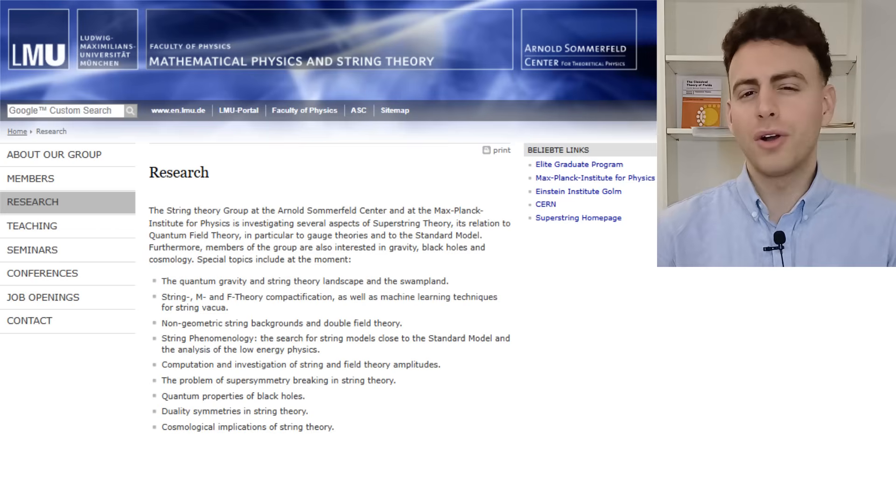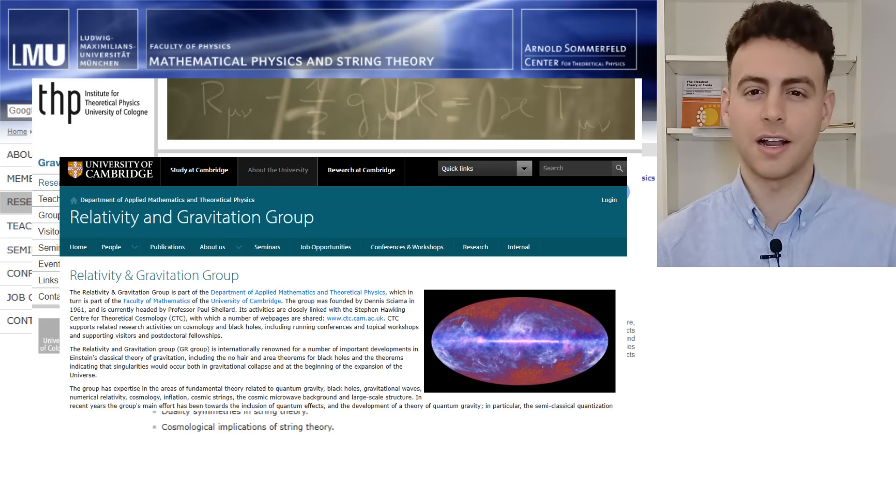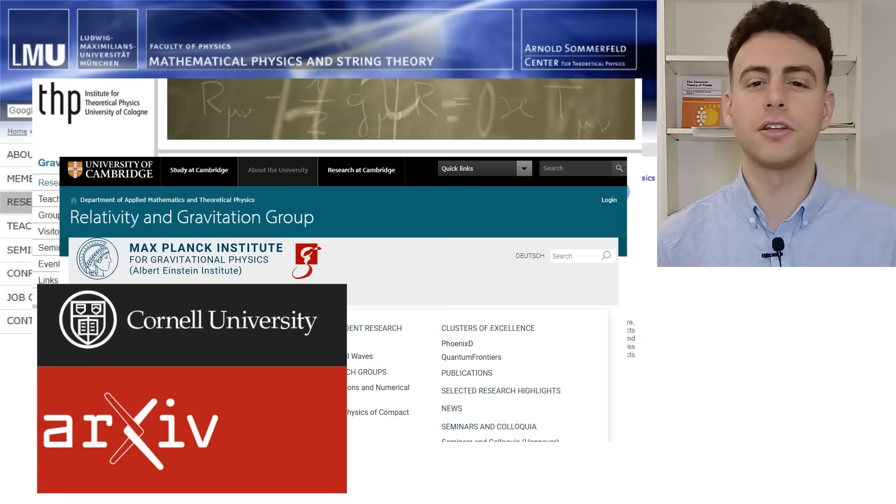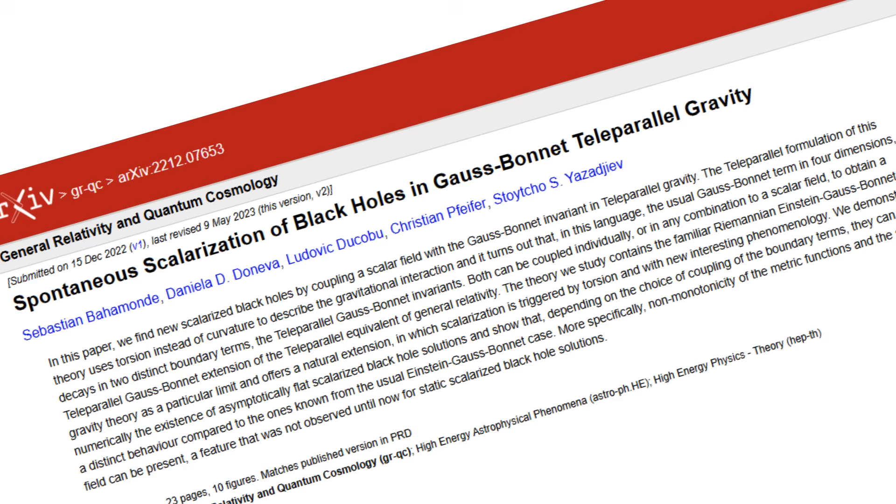However, when we look at what professional researchers in academia are actually doing when they claim to be researching theoretical gravitation, these are the kinds of paper titles we typically encounter on the archive and published in well-known journals: Spontaneous scalarization of black holes in Gauss-Bonnet teleparallel gravity.